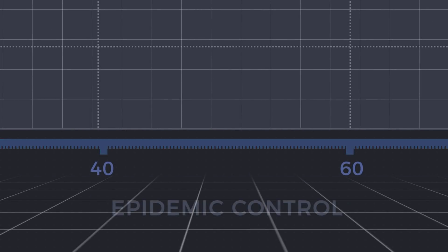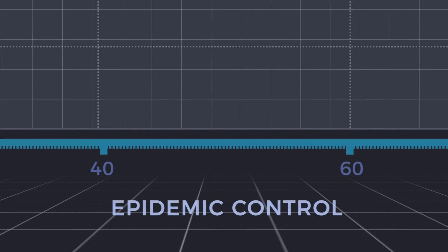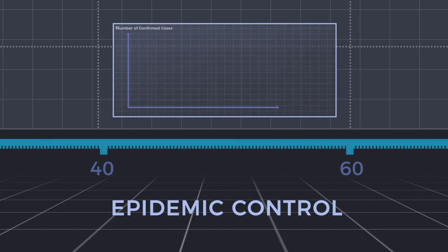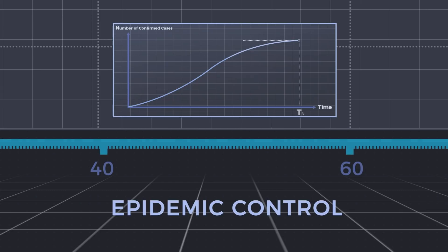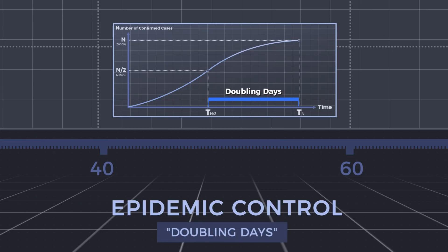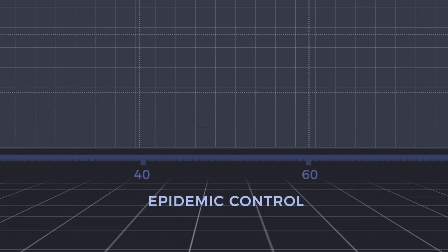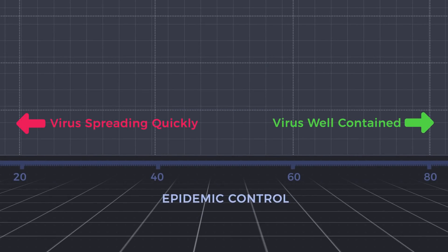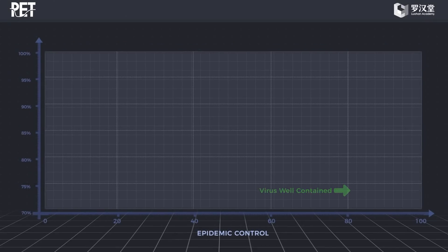The horizontal axis represents the speed of epidemic growth. Specifically, it refers to the time it takes for a country's confirmed cases to double to its most current value — we call this doubling days. The further right on the x-axis, the better the country has contained the virus.